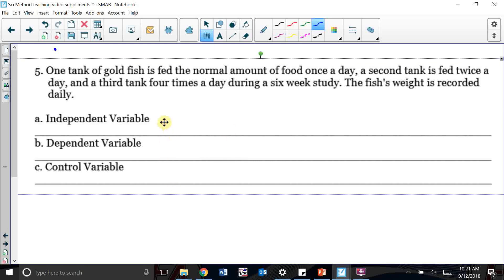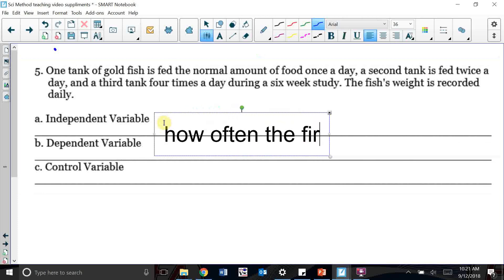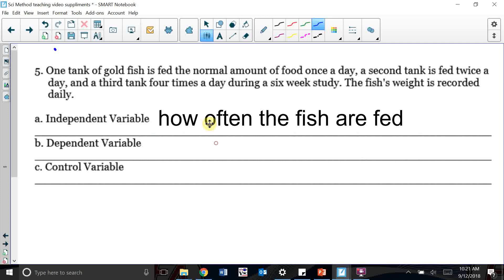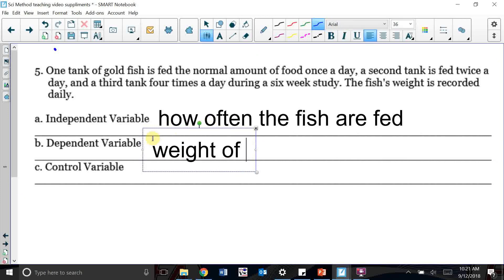So for our variables, it's something we should already be comfortable with. What's changing here? How often the fish are fed. That's what I'm changing. My dependent variable here, what I'm measuring, is the weight of the fish.